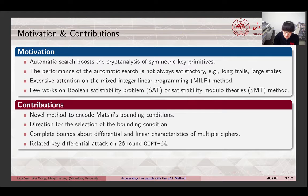The contribution of this work can be divided into four parts. Firstly, we propose a novel method to encode Matsui's bounding conditions. Following that, we provide a direction for the selection of the bounding condition. Then with the new method, we obtain complete bounds of both differential and linear characteristics of multiple ciphers. The fourth one is we give a related-key differential attack on 26-round GIFT-64.